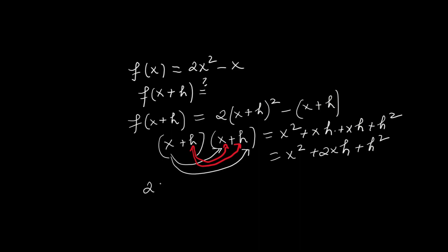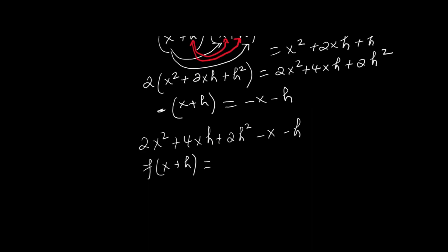Now multiply the entire expression by 2. That gives 2x² + 4xh + 2h². Next, subtract the quantity (x + h). Distribute the negative sign: -x - h. Now write the final simplified expression. f(x + h) = 2x² + 4xh + 2h² - x - h.